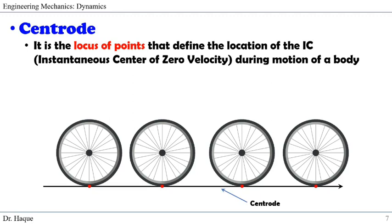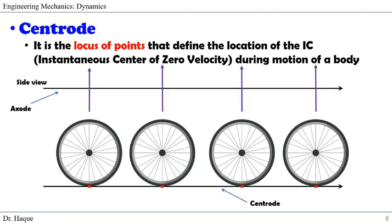Finally, let us introduce another term called Axode. If you consider the perpendicular rotation axis on each IC point, that locus of those axes is called Axode. If you see the image from the side view, the axis is perpendicular to the plane at all those red points, and that locus of those axes is called Axode.